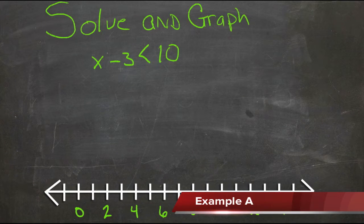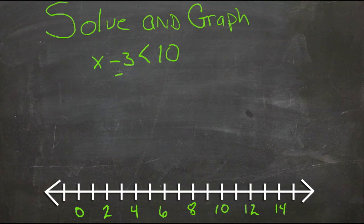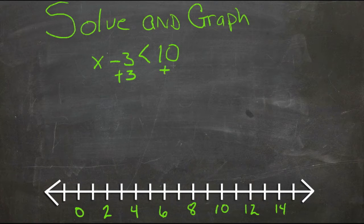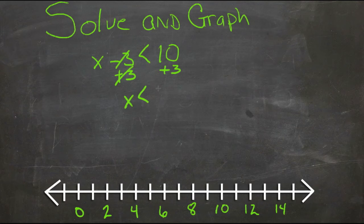In this first example, all we need to do is get rid of the negative 3 so the variable is by itself on one side of the operator. We'll do that by doing the opposite of subtraction. So we'll add 3 over here, add 3 over here. These 3's will cancel and we'll have x is less than 10 plus 3 which is 13.